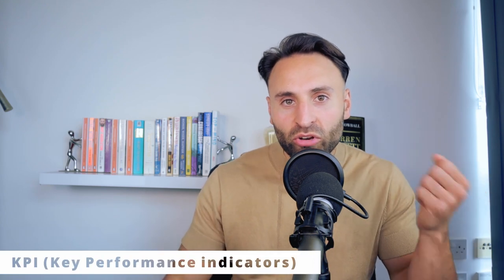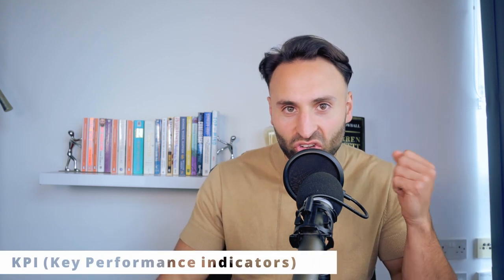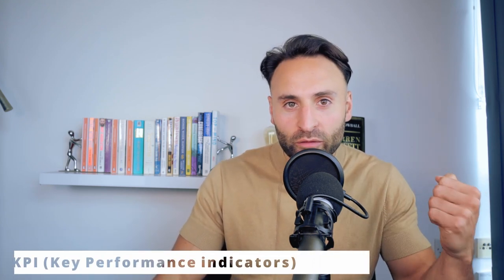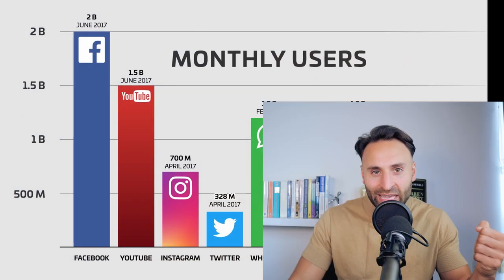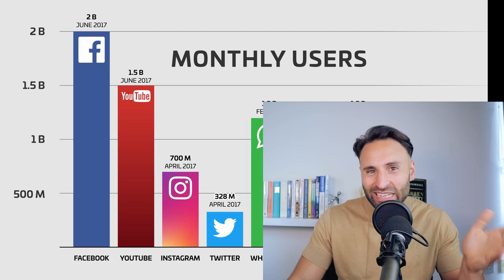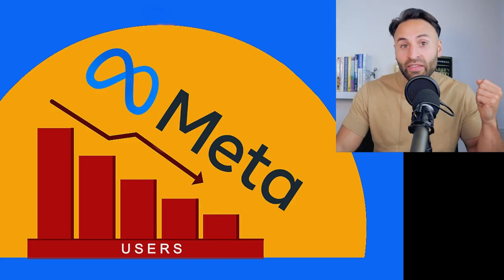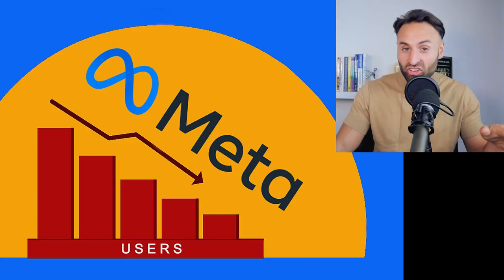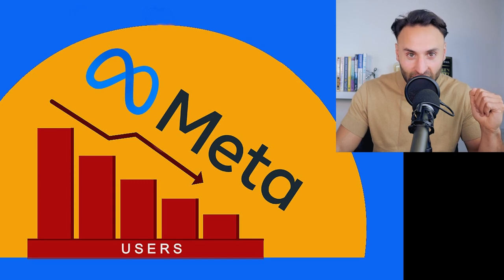Then you have key KPIs or a North Star metric which the organization can analyze to see if they are moving towards their goal. For example, with a company like Facebook — now called Meta Platforms — one of their key KPIs is monthly active users for the Facebook platform. If that starts to decline, it is a real issue for the company, which did happen recently and the stock fell off a cliff.